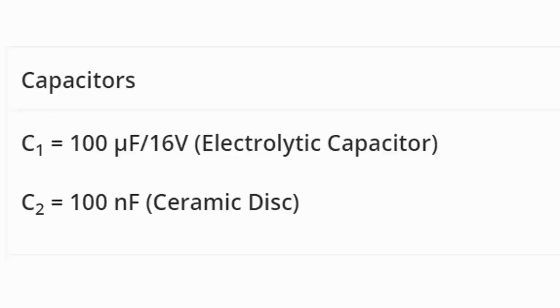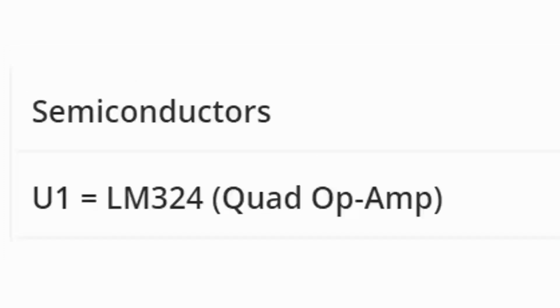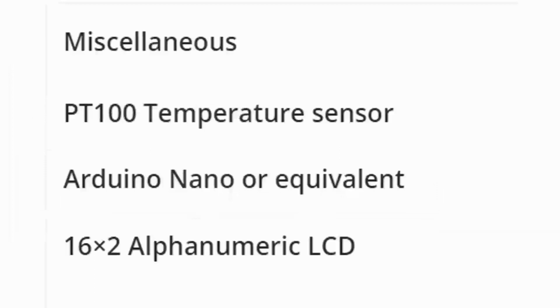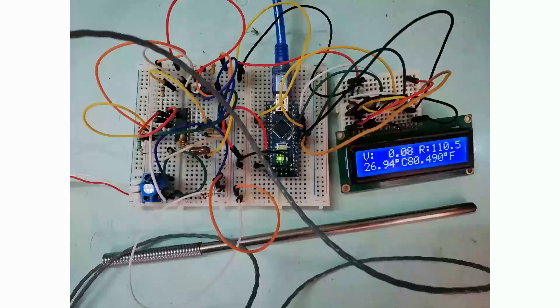If we talk about capacitors, two capacitors: one of electrolytic type 100 microfarad, and another of disc type 100 nanofarad ceramic disc. Single quad operational amplifier LM324 IC is utilized here. One PT100 temperature sensor, one Arduino Nano or equivalent (you can use any Arduino family like Uno or Mega), and 16x2 alphanumeric display. Connect all components as shown in circuit diagram.